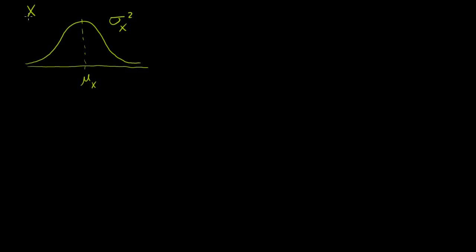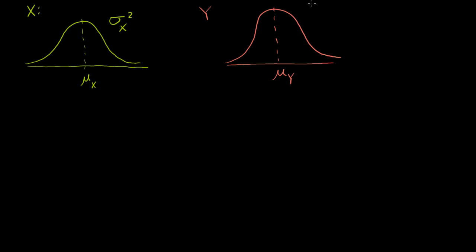Now let's say we have another random variable y. Let's draw its distribution and the parameters for that distribution. It has some true population mean and some variance. I've drawn it as roughly normal, but we don't have to assume that it's normal, because when we take the samples we're going to assume we're taking enough samples that the central limit theorem will apply.